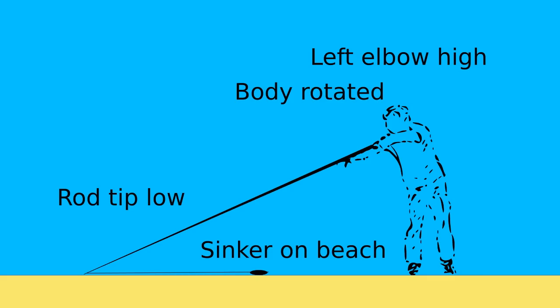The EasyCast begins with the sinker on the beach under the rod. This maximizes the casting arc and it guarantees that the rod starts bending early, which is exactly what you want. By turning away from the sea to lay the sinker on the beach, your body winds up like a coiled spring.